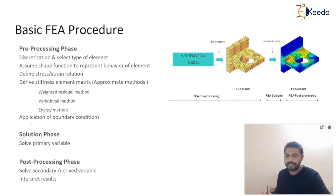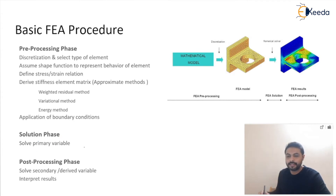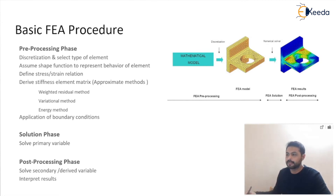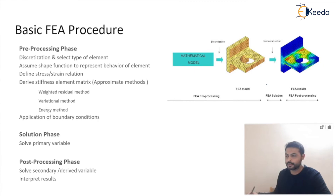After that, we apply boundary conditions, which are the known values over some domain. By applying those boundary conditions we can find the unknowns like the primary variable — that comes under the solution phase. After that, we can find the derived or secondary variable from the primary variable, which comes under the post-processing phase, where we interpret and display the results. This is the overall flow of the FEA procedure, and in the pre-processing phase we utilize the weighted residual method.